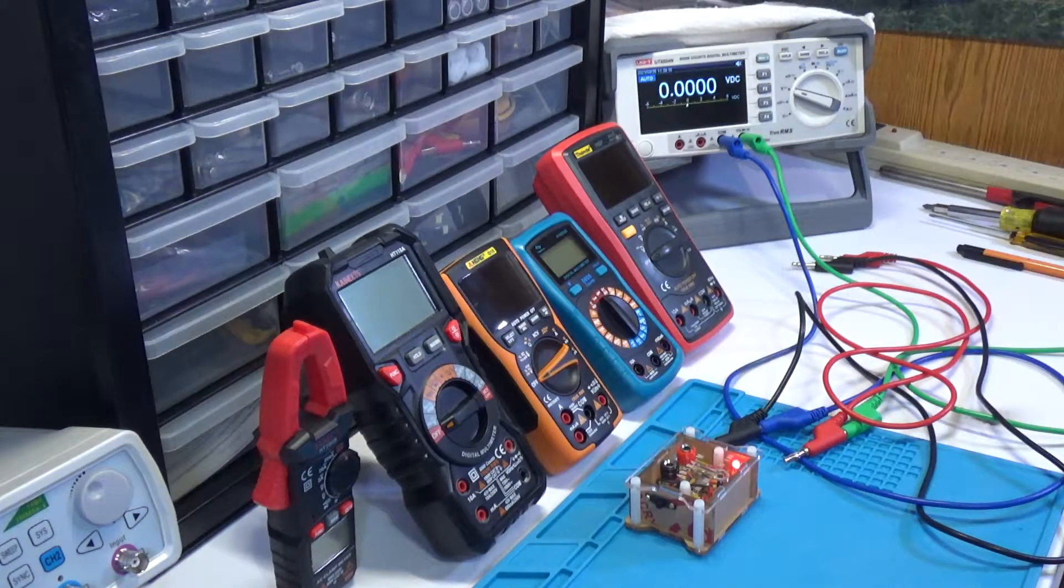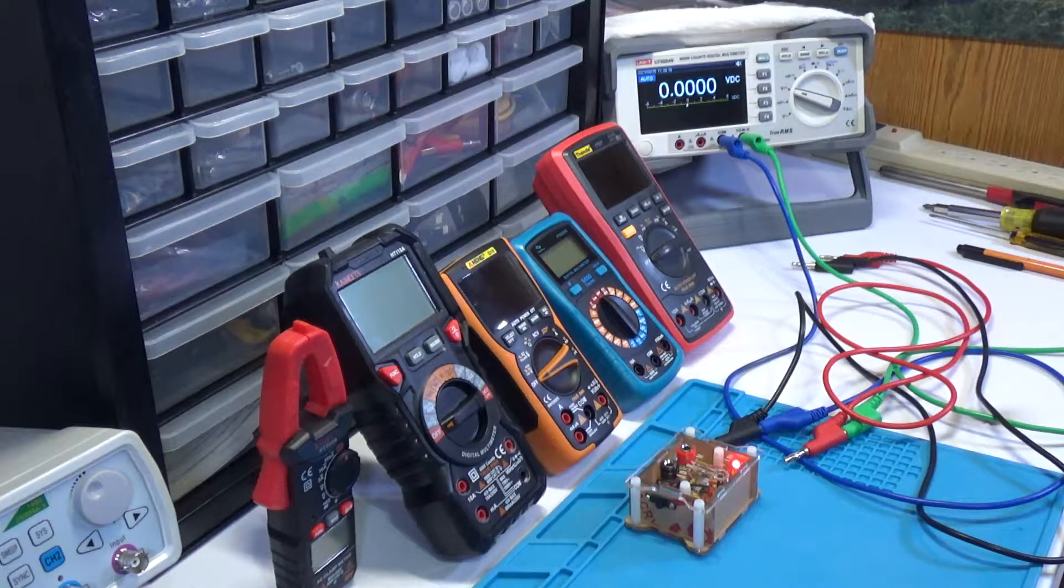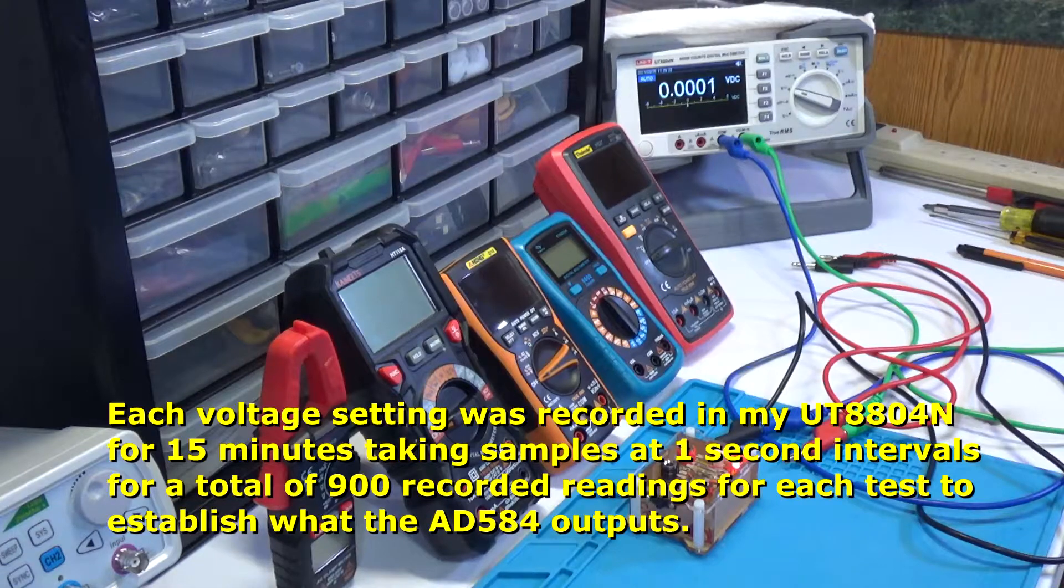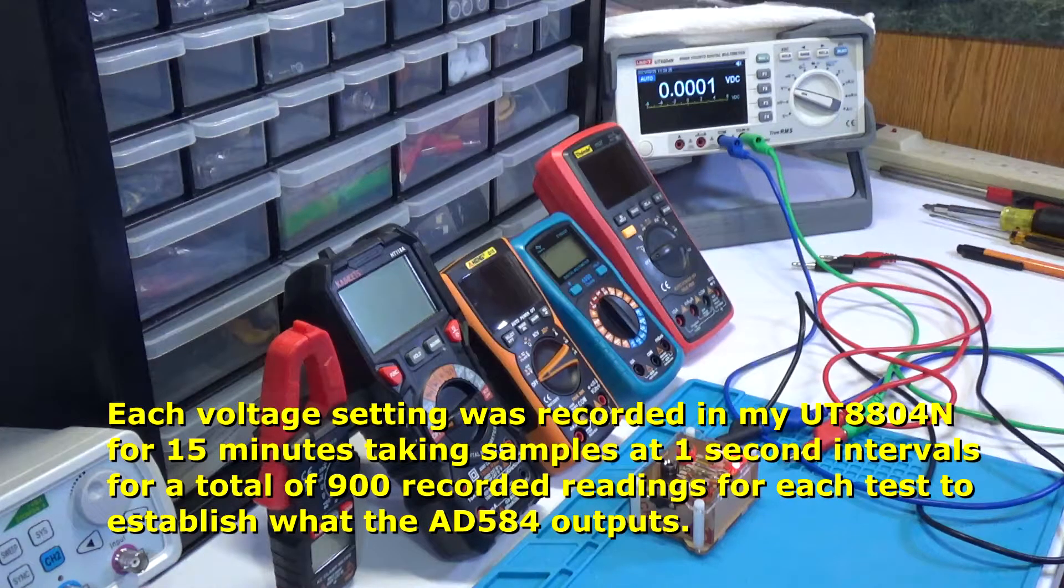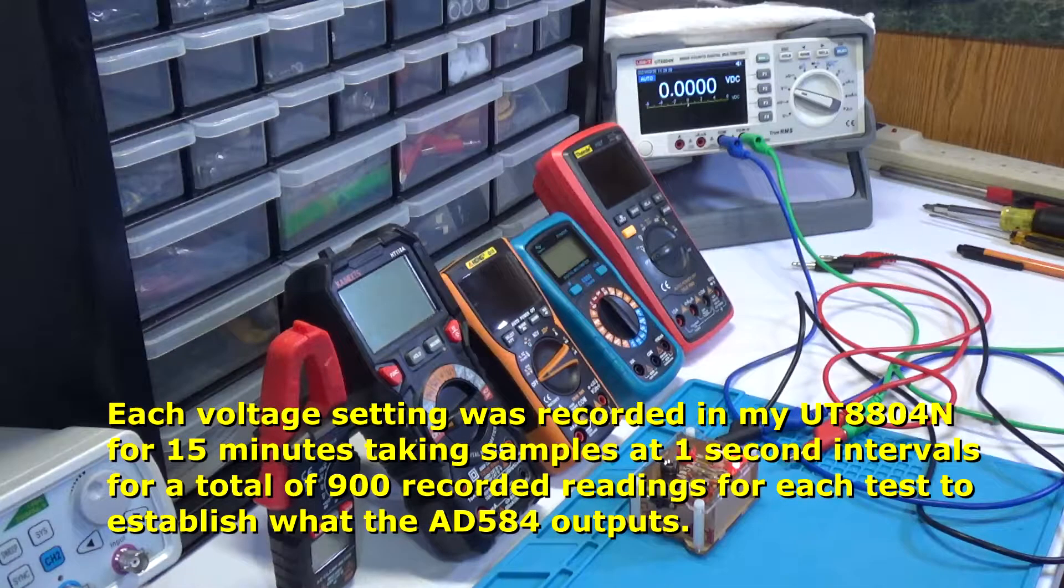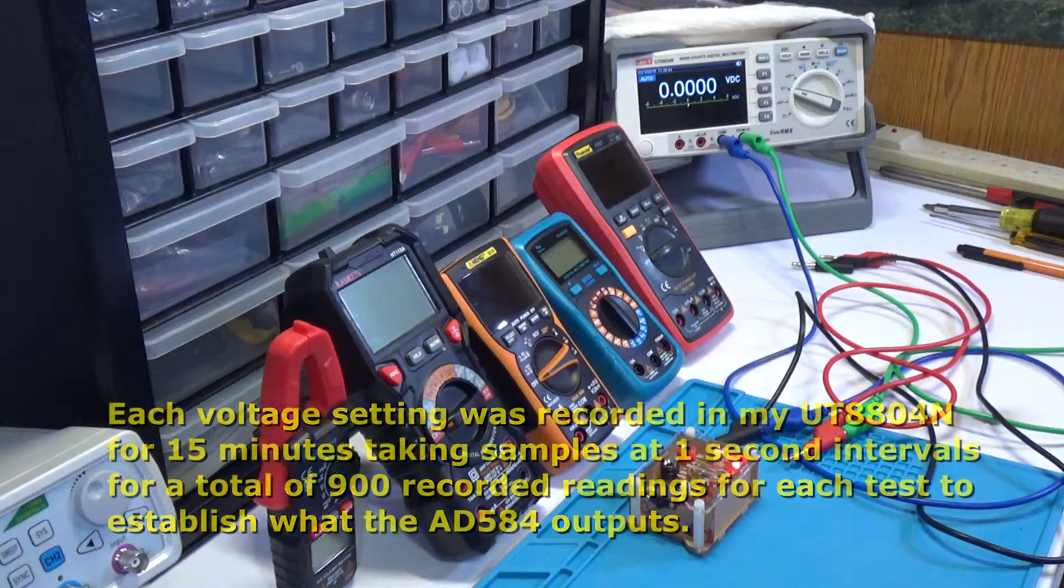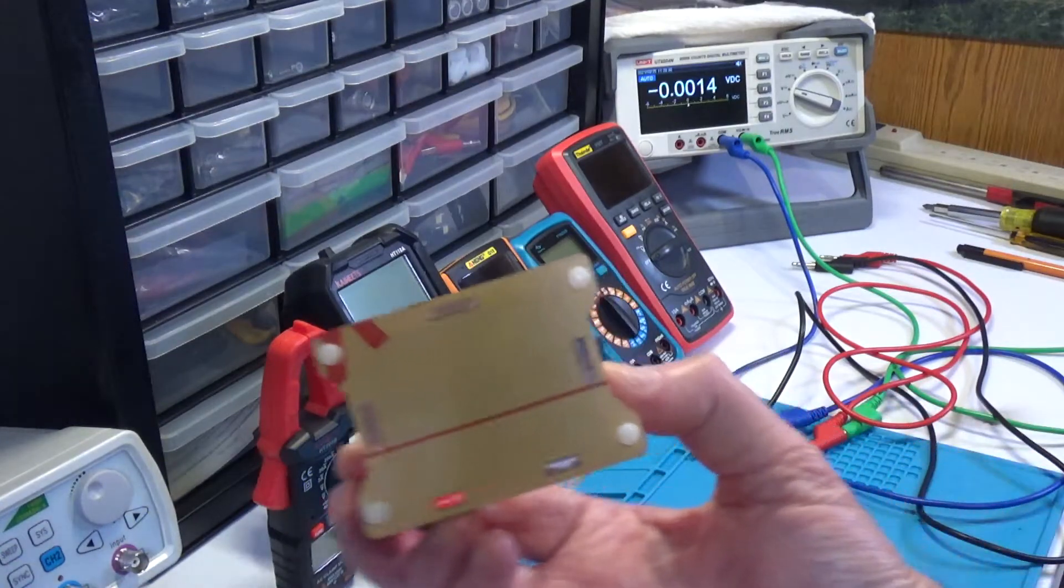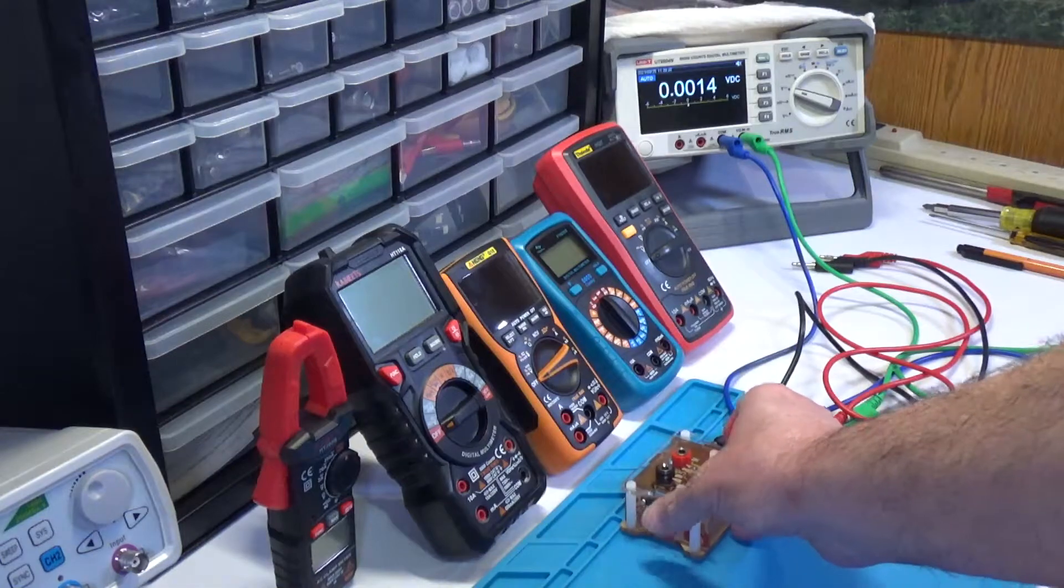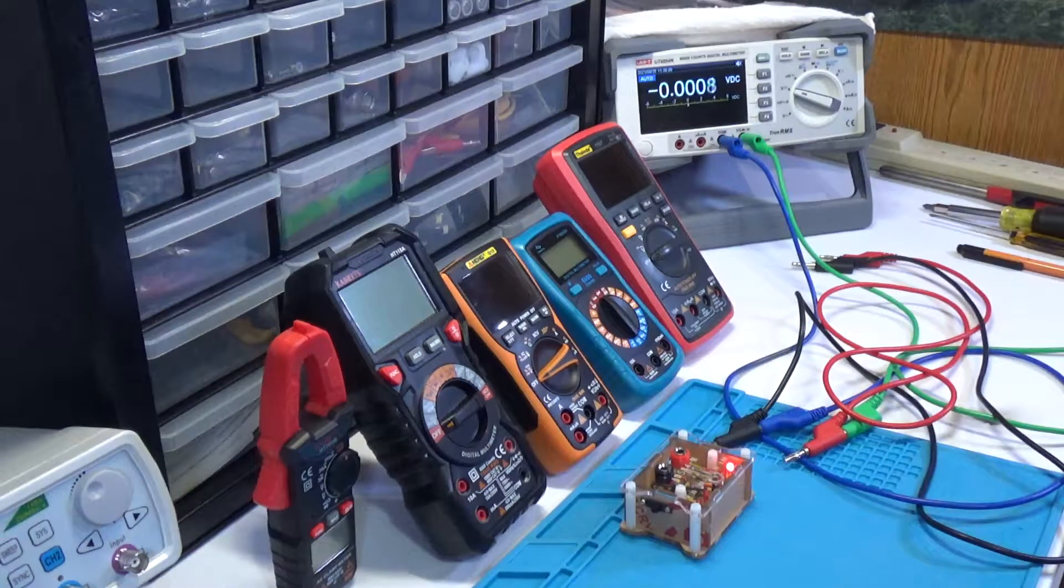I did let it warm up for 30 minutes on two separate days with the two separate temperatures and ran 15 minute records with one second intervals on the bench multimeter to see how much variation there was, and there was not much at all. The reason I had to do that is because this particular voltage standard did not come with a sticker.